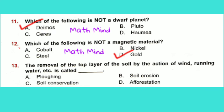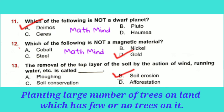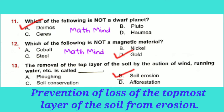Question No. 13: The removal of the top layer of the soil by the action of wind, running water, etc. is called dash. Option B is correct: Soil erosion. Option D, Afforestation, means planting a large number of trees on land which has few or no trees. Option C, Soil conservation, means prevention of loss of the topmost layer of soil from erosion.